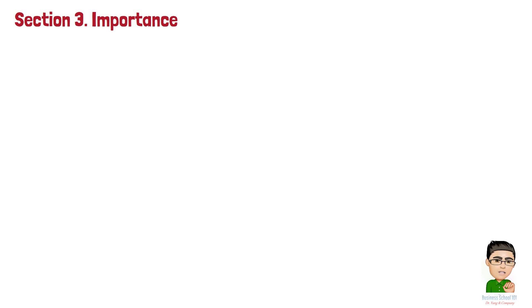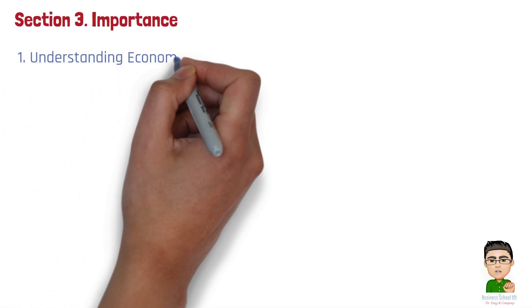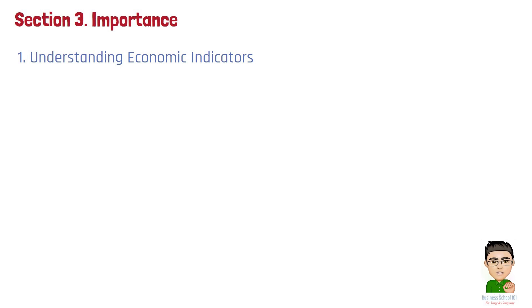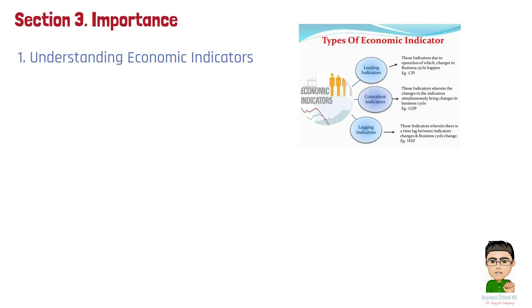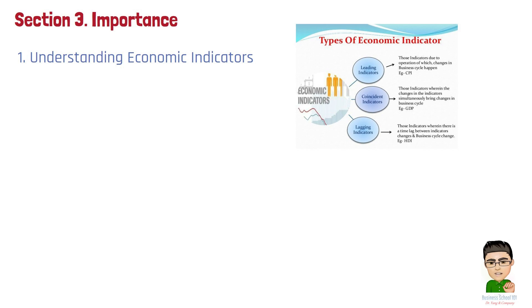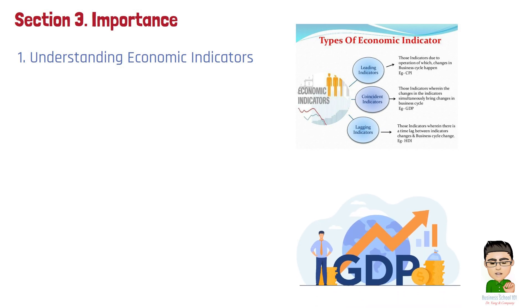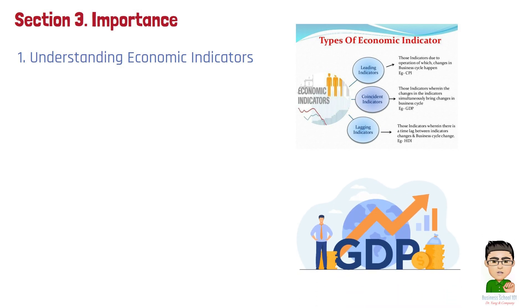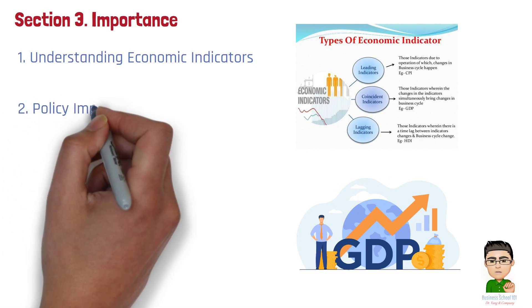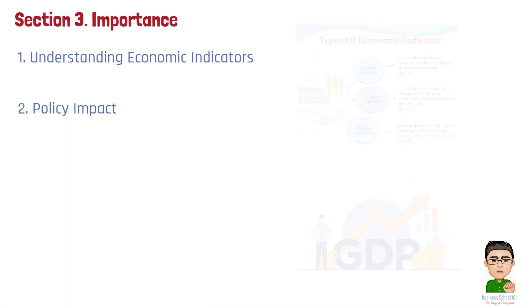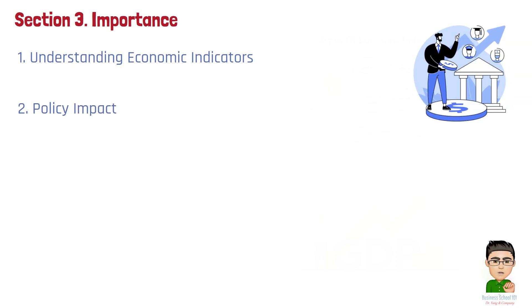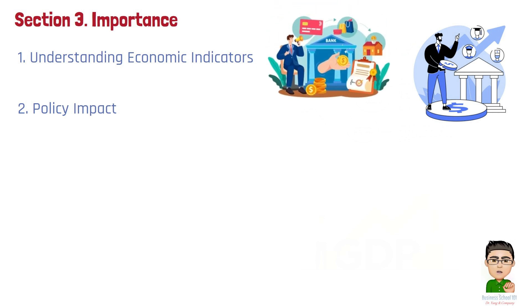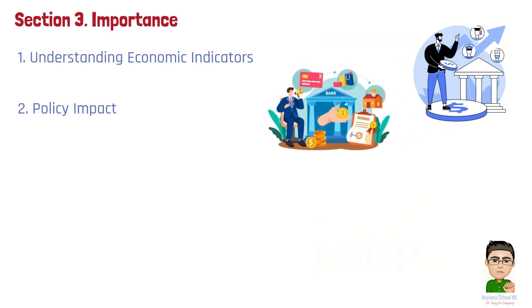Learning macroeconomics is crucial for several reasons. Number 1: Understanding economic indicators. It helps you interpret key indicators like GDP, CPI, and unemployment rates, providing insights into the overall health of the economy. For example, by understanding GDP growth rates, you can gauge whether the economy is expanding or contracting, affecting your investment decisions and job prospects. Number 2: Policy impact. Knowledge of macroeconomics helps you understand the effects of fiscal and monetary policies, such as government spending and interest rate changes, on economic stability and growth. When the central bank changes interest rates, macroeconomics explains how this can influence borrowing costs, consumer spending, and economic activity.